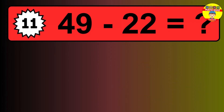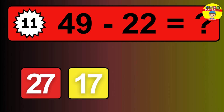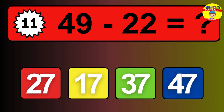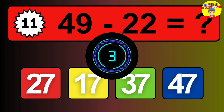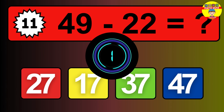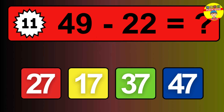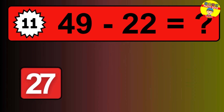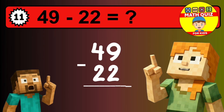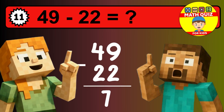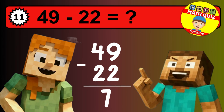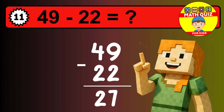What is 49 minus 22? Time to think. Let's solve this step by step. We start with the units: 9 minus 2 is 7. Then we go to the tens: 4 minus 2 is 2. The final answer is 27.